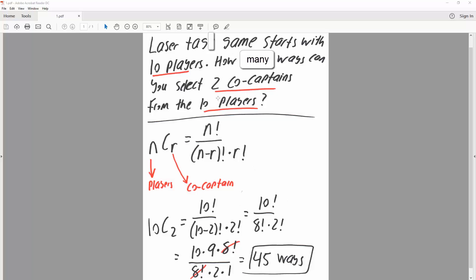So we have a total of 10 players, and we want to select just two co-captains. Each captain position is equivalent, so captain 1 and captain 2 are the same, essentially. So this will be an example of a combination.